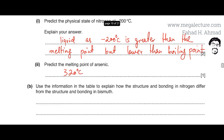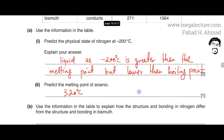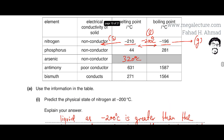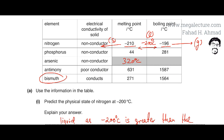The next part of the question asks us to use information in the table to explain how the structure and bonding in nitrogen differs from the structure and bonding in bismuth. Looking at the table, bismuth has high melting and boiling points and conducts electricity in the solid state, which suggests it is a metallic substance — metals have high melting and boiling points and conduct electricity in solid state.